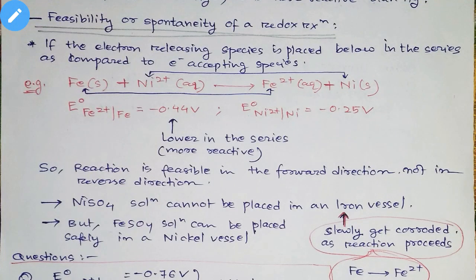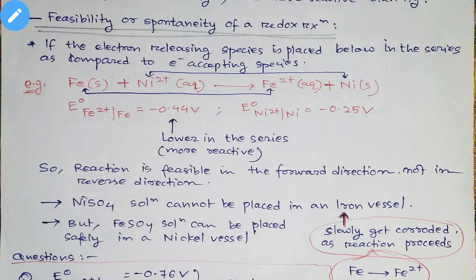Hello students. Today in this video we are going to start a topic which is related to the electrochemical series. The name of today's topic is the feasibility or the spontaneity of a redox reaction. We are going to discuss when a redox reaction will be spontaneous or how we will know that a redox reaction is spontaneous or feasible.